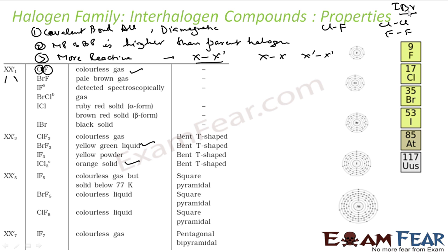ClF is a colorless gas. BrF is a pale brown gas. ClF3 is a colorless gas. BrF3 is a yellow-green liquid. IF3 is a yellow powder. ICl3 is an orange solid. IF5 is a colorless liquid. Regarding structures: XX'3 is bent T-shape, XX'5 is square pyramidal, and XX'7 is pentagonal bipyramidal.